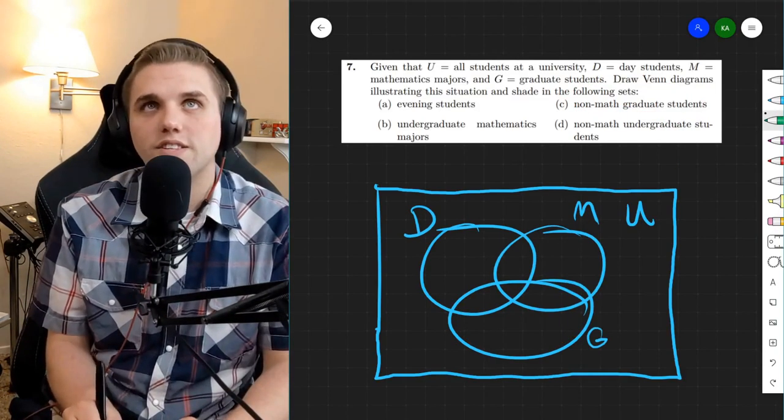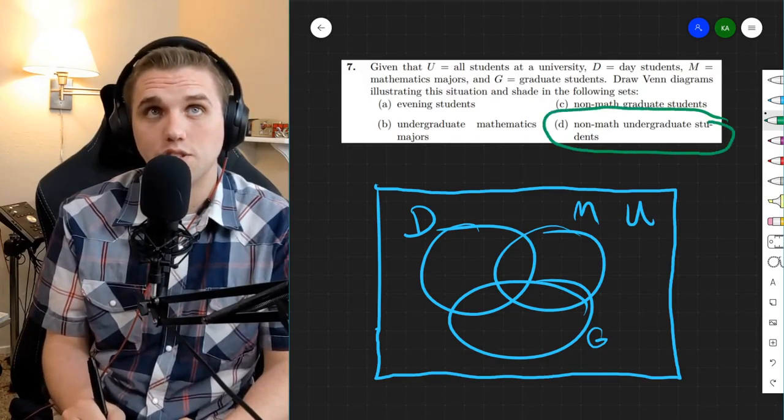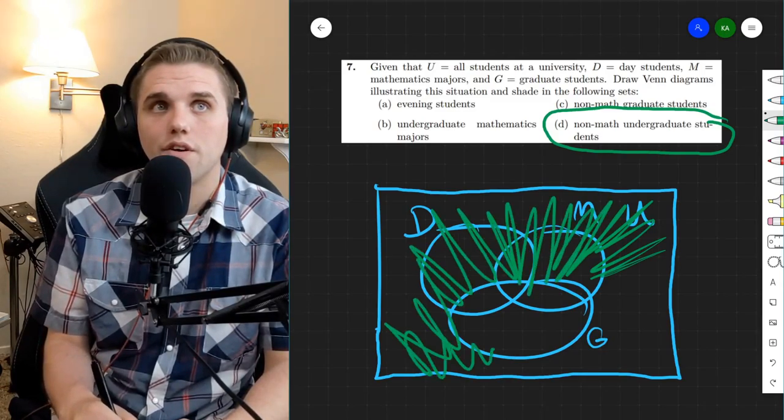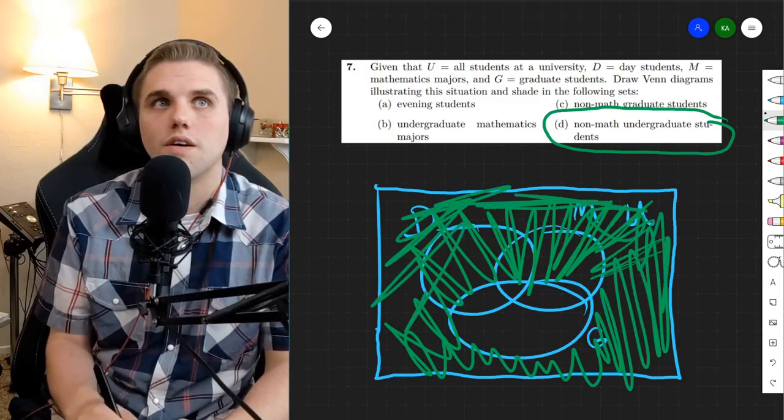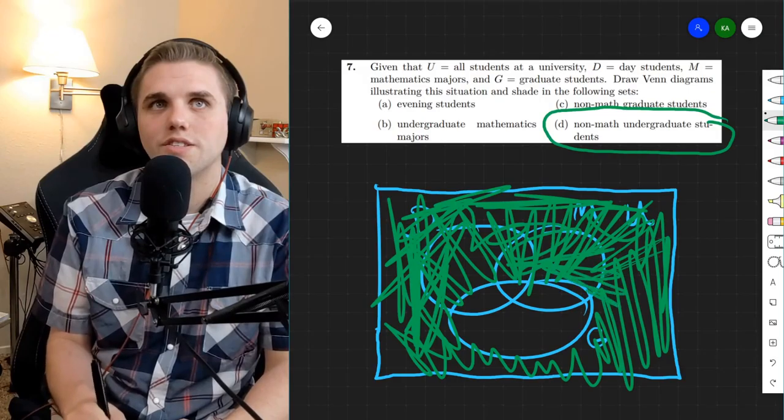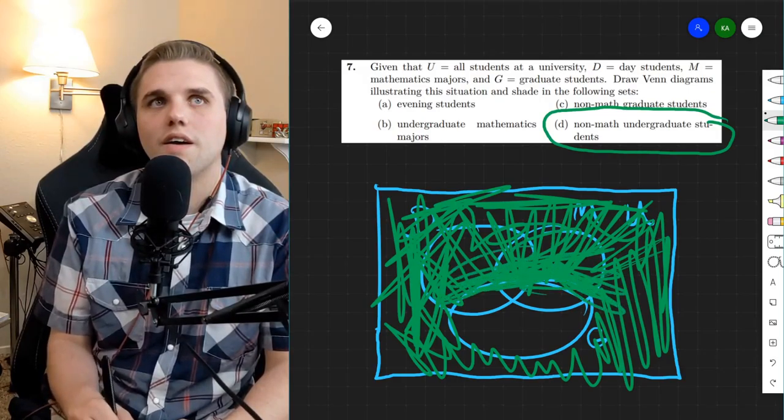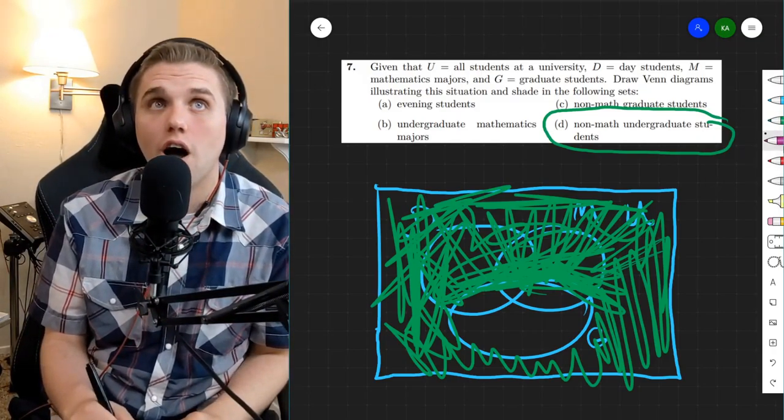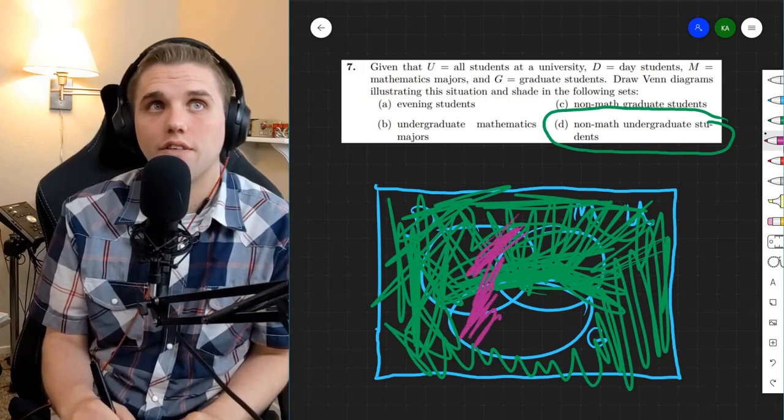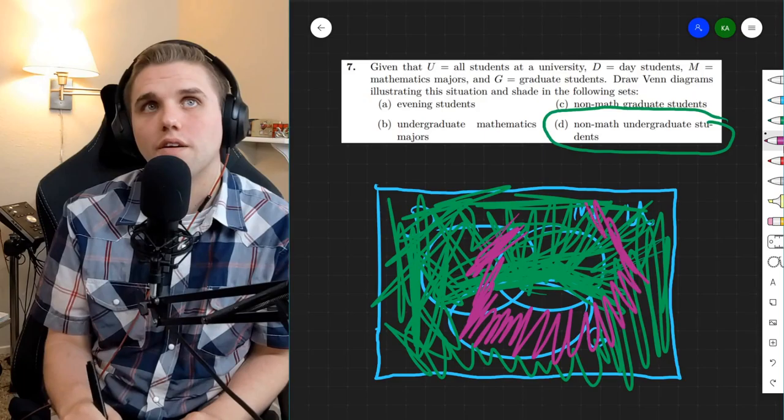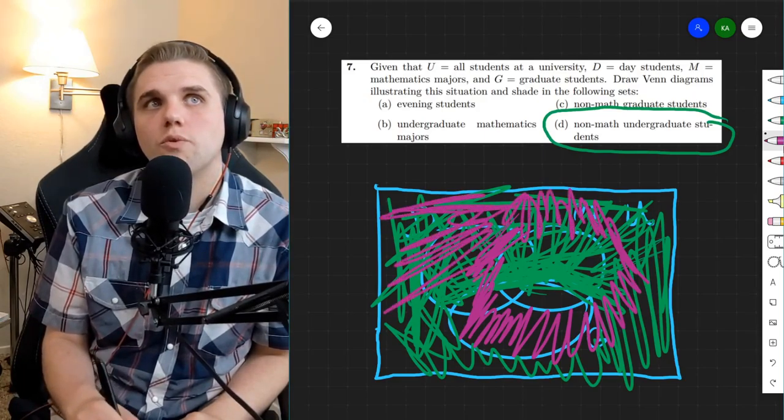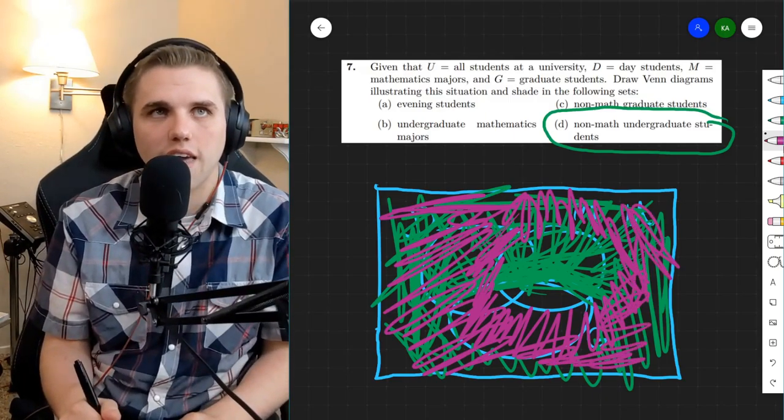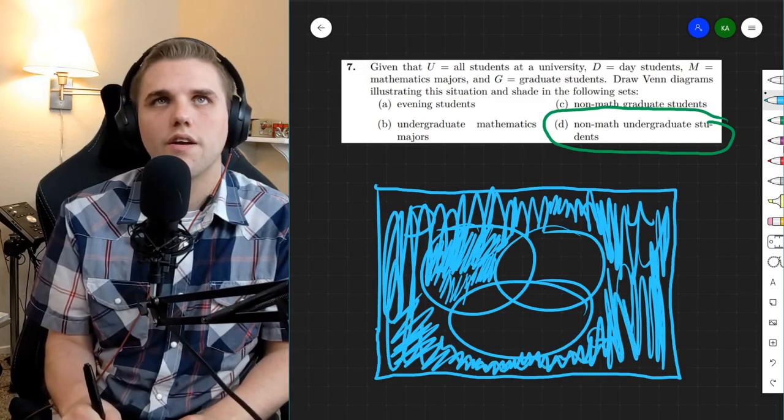All right, part D. In this case, we're working with non-math undergraduate students. Now, undergraduate students are anyone outside of graduate students. I need to make sure I stay in my universe here because technically right now I'm not. And it also has to be non-math students, and so everything outside of the math circle here. So we need the regions that contain both green and purple. So that looks like everything in these blue regions right here would represent part D.